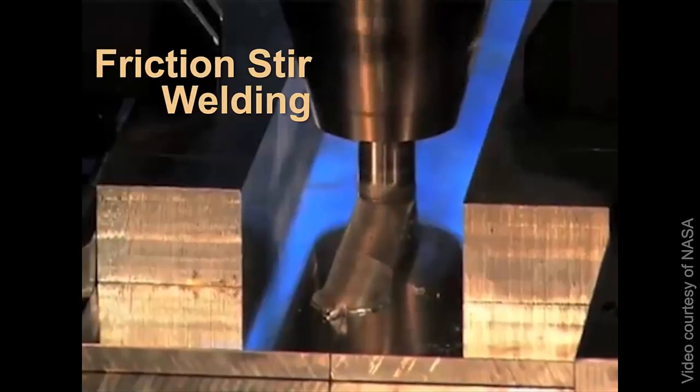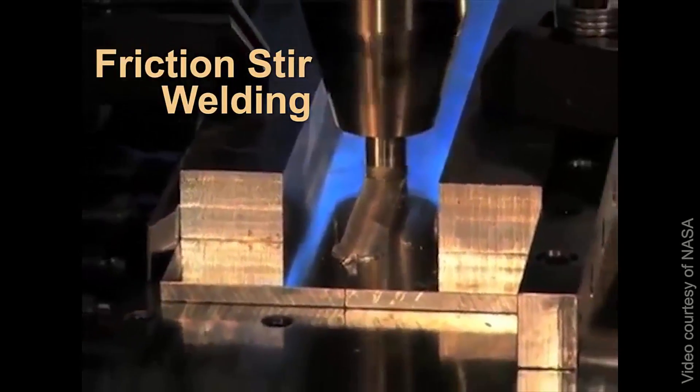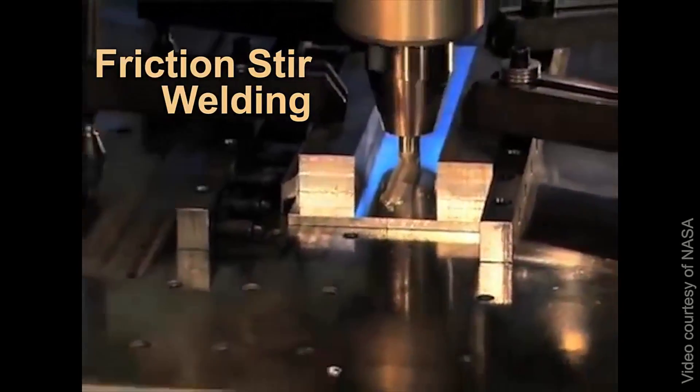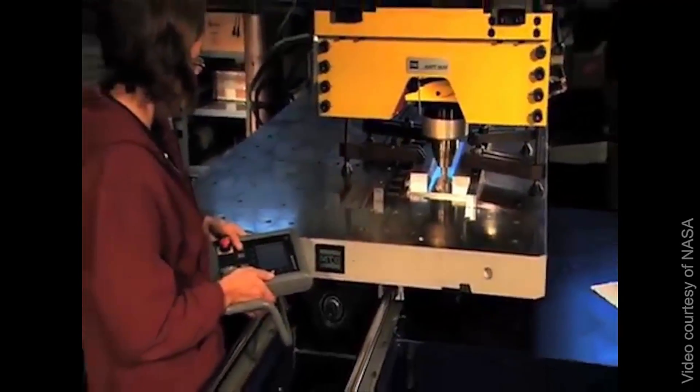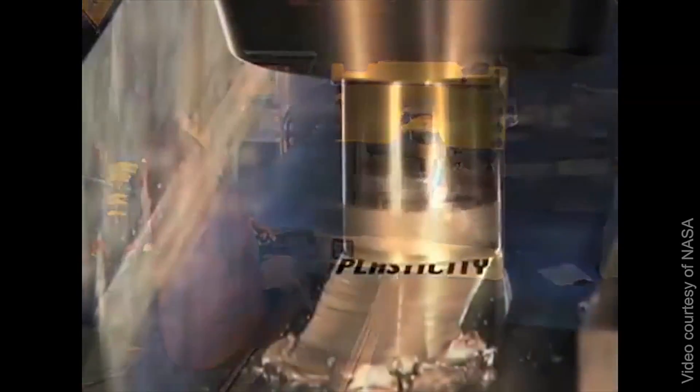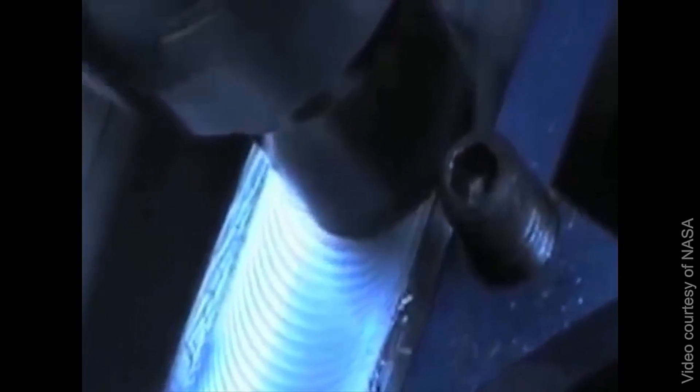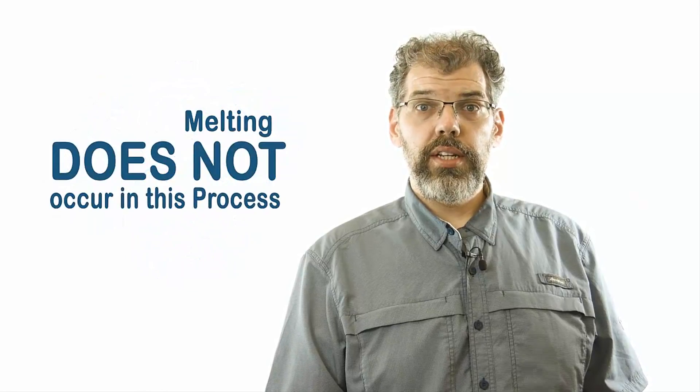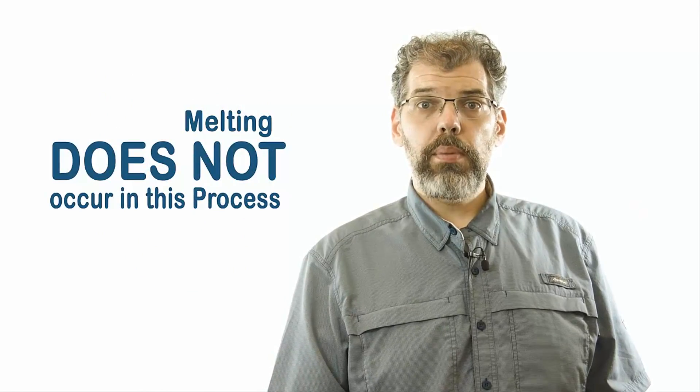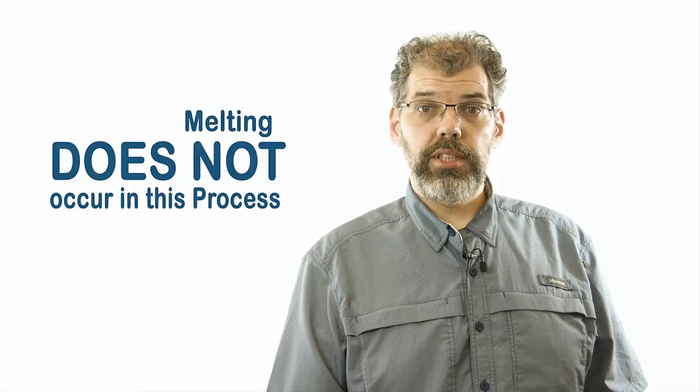Friction stir welding is another welding technique that is quite different from the previous two. Rather than relying on completely melting the material to fuse the parts together, friction stir welding relies on using friction to heat the materials up until it softens but does not melt, and then mechanically mixing or stirring the softened material together. As melting does not occur, lower temperatures are needed in the welding process, opening up a wider range of weldable metallic materials.